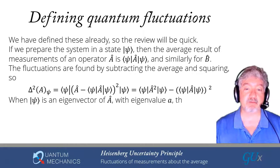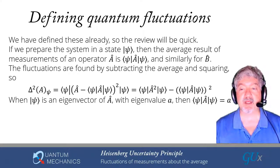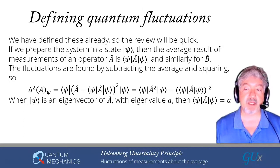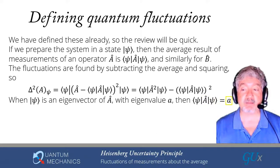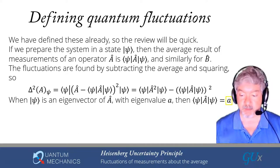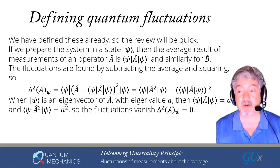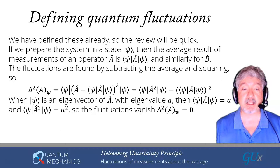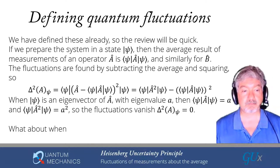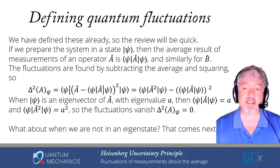When psi is an eigenvector of A with eigenvalue little a, the expectation value of A in psi equals little a: the operator A acting on psi gives little a times psi, and taking the inner product with the bra psi gives little a times psi psi, which equals little a since psi is normalized. For the expectation value of A squared, operating A twice on psi gives a squared, so the fluctuations vanish. When I'm in an eigenstate I have no fluctuations. What happens when I'm not in an eigenstate is what we discuss next.